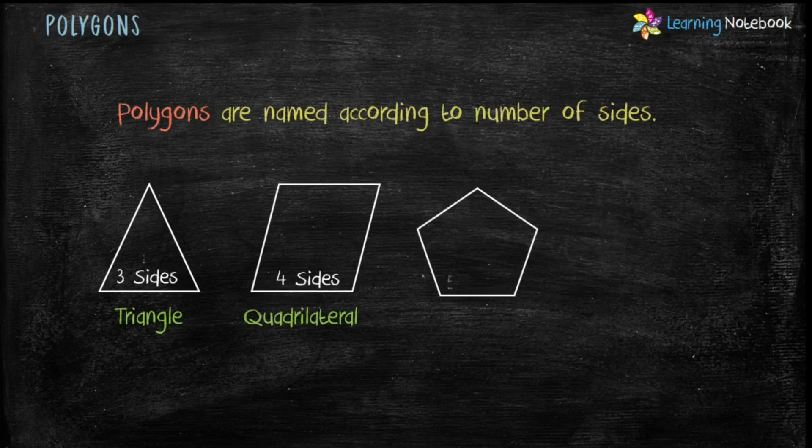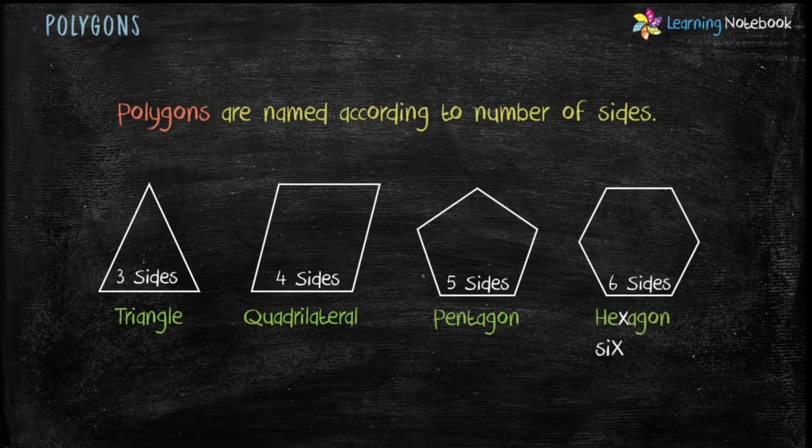Then, a polygon with five sides is called pentagon. A polygon with six sides is called hexagon. You can easily remember hexagon from six. As both words, six and hexagon have letter X.